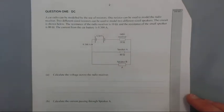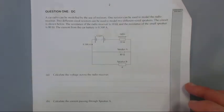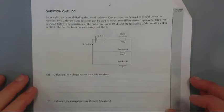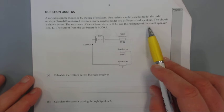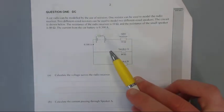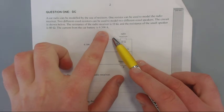Car radio can be modeled by the use of two resistors. One resistor can be used to model the radio receiver, and two different sized resistors can be used to model the speakers. The circuit is shown below. The resistance of the receiver is 10 ohms, the resistance of the small speaker is 80 ohms, and the current from the battery is 0.3 amps.